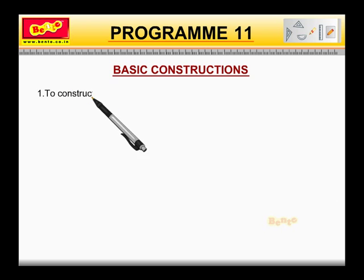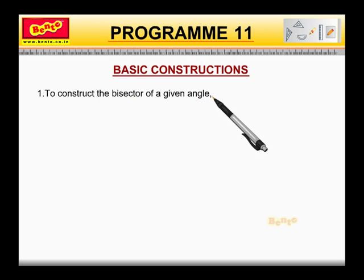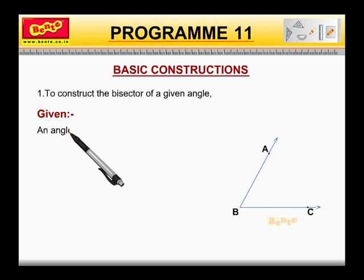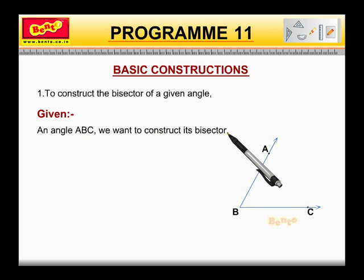To construct the bisector of a given angle, given an angle ABC, we want to construct its bisector. Now, let us see the construction.